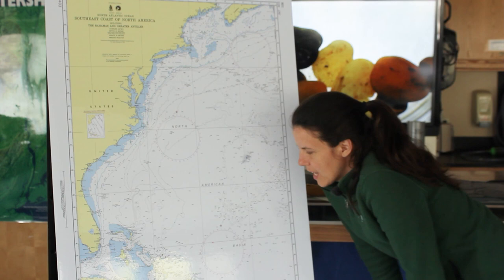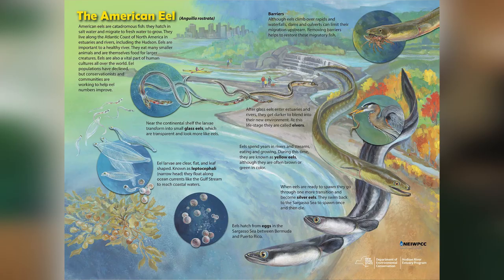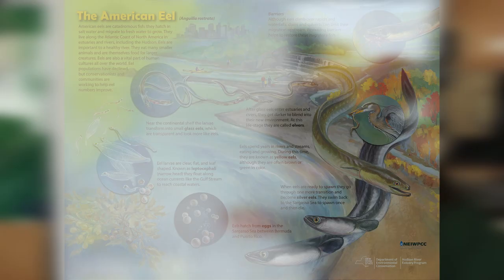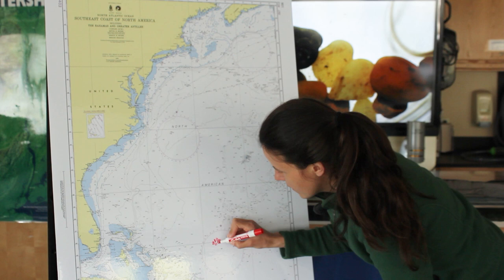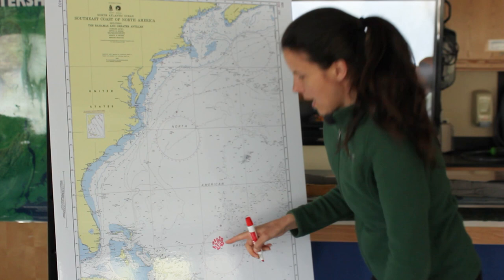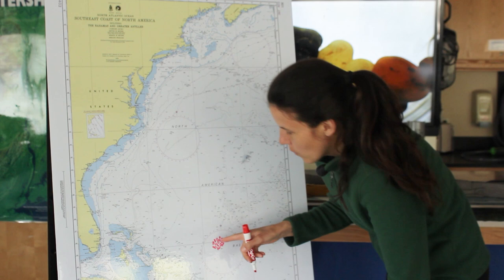Here we are out in the Atlantic Ocean and we are going to travel along with the American eel as they make their migration path. Out here in what is called the Sargasso Sea is where scientists have identified that eels spawn — so this is where you would find eggs. Then once the eels hatch from their eggs, they start to travel.